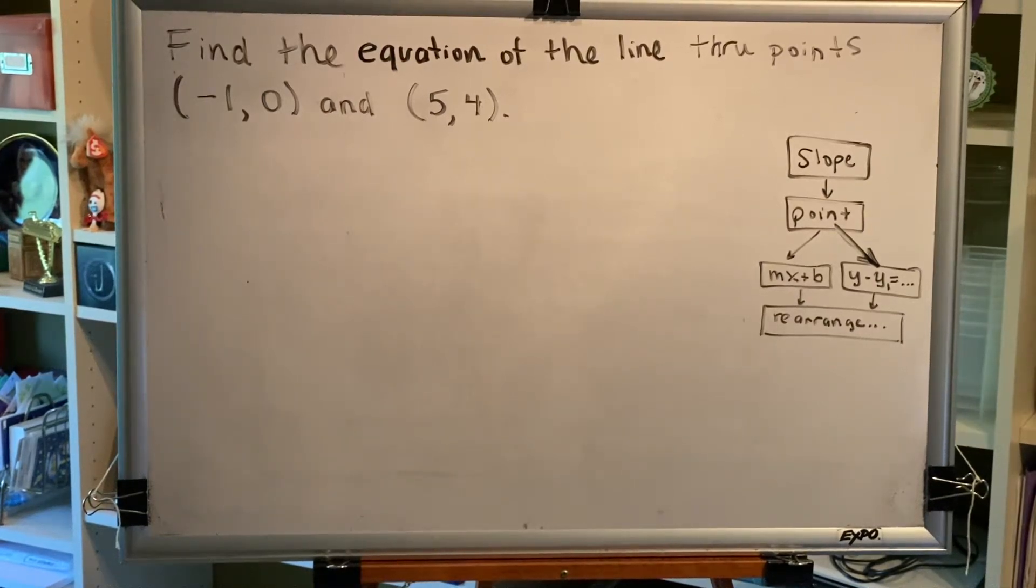The topic of this video is properties of tilted or slanted lines. Let's look at a problem. Find the equation of the line through points (-1, 0) and (5, 4).